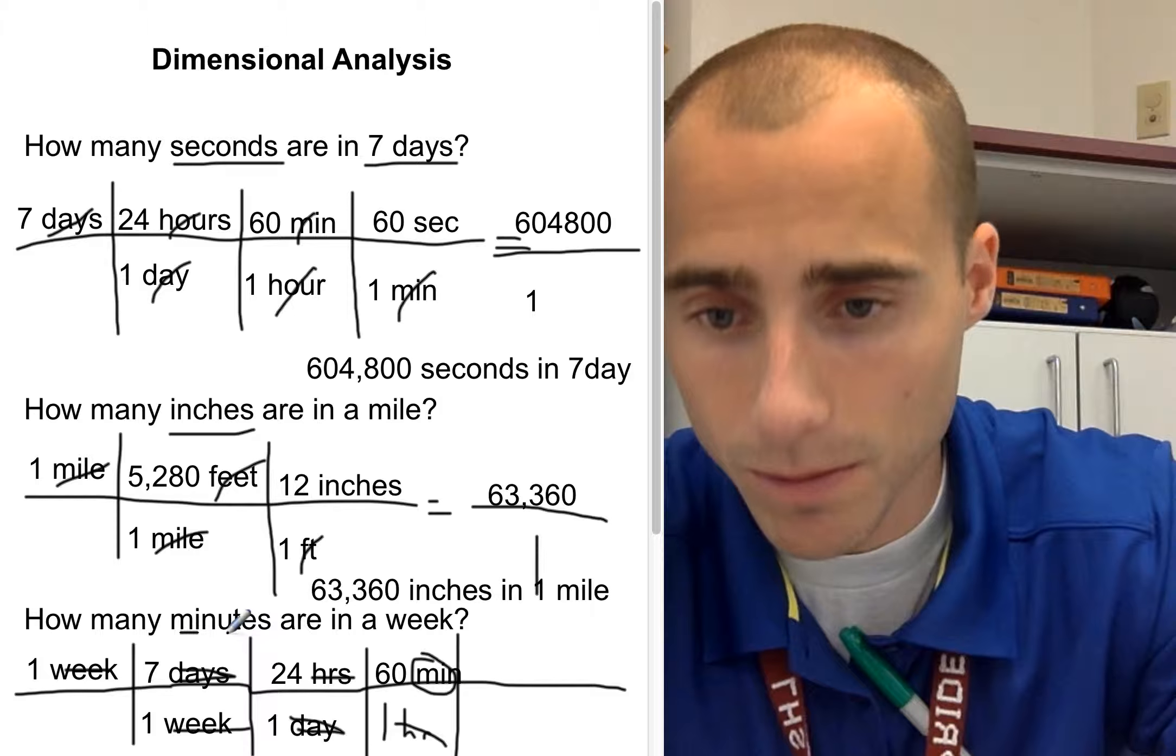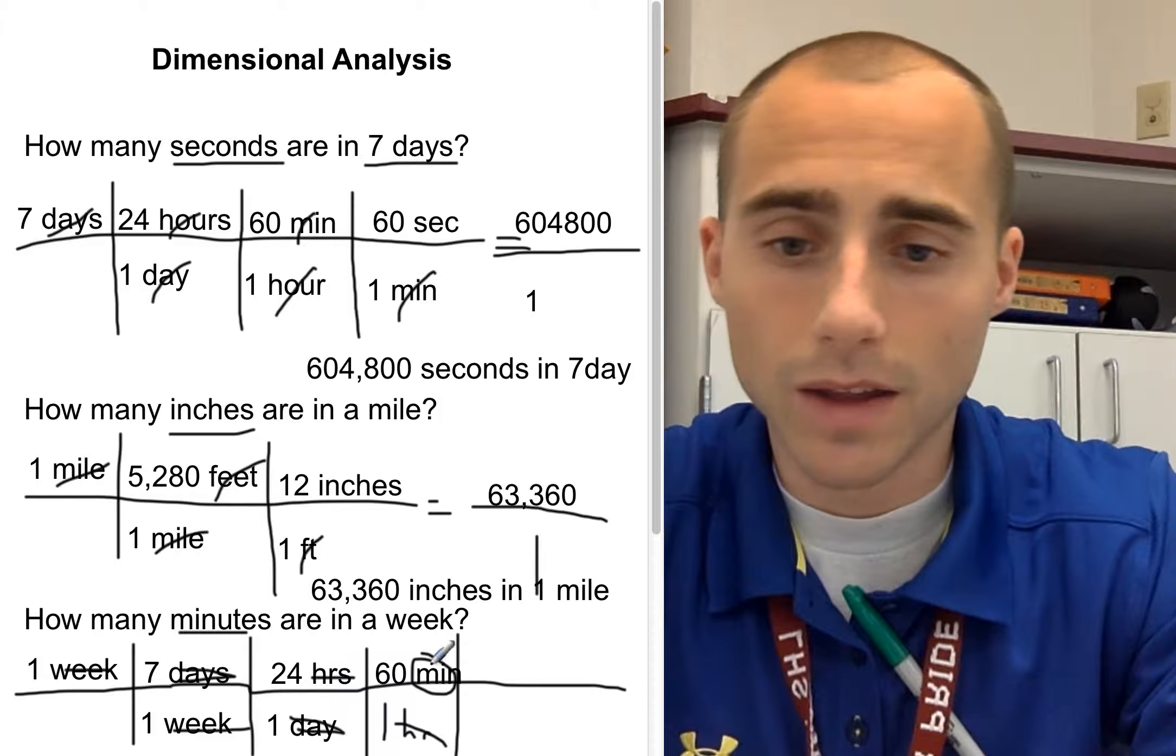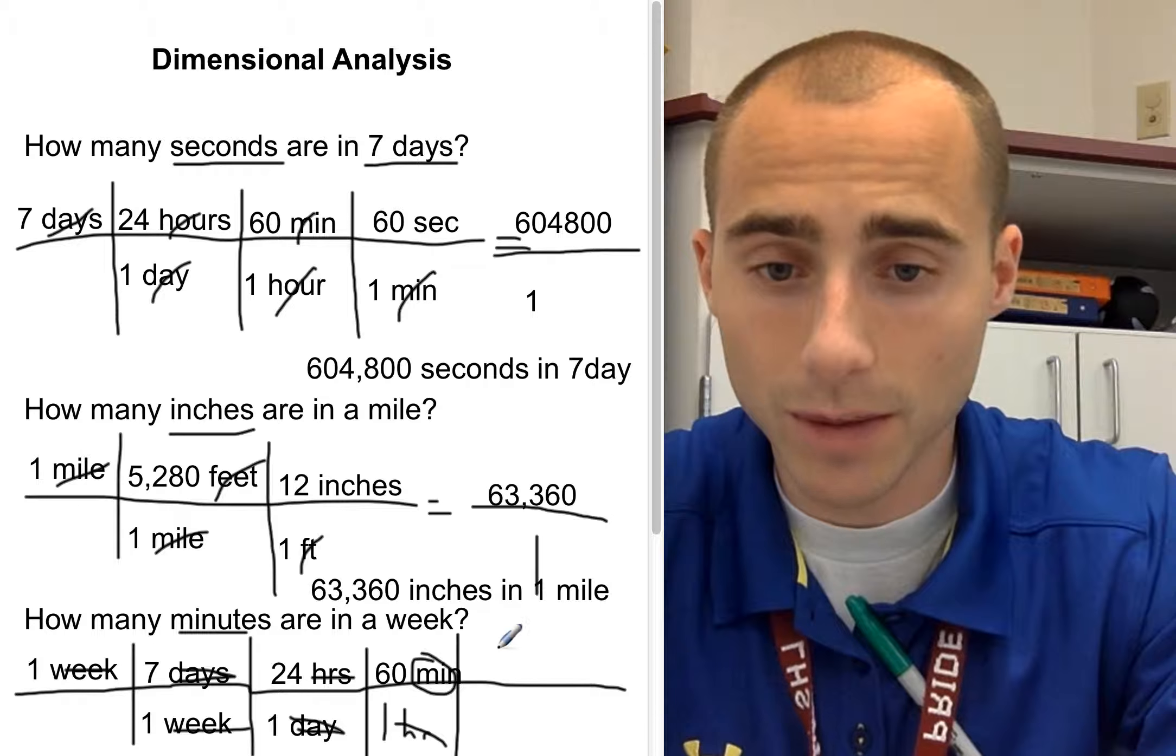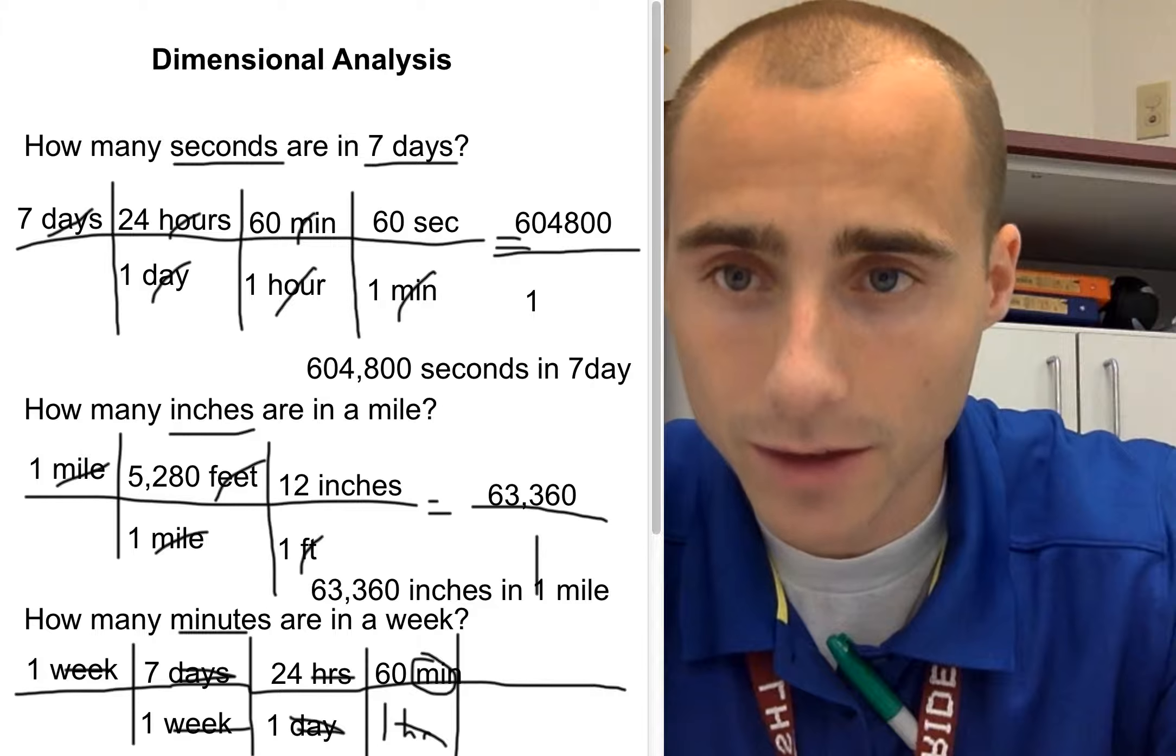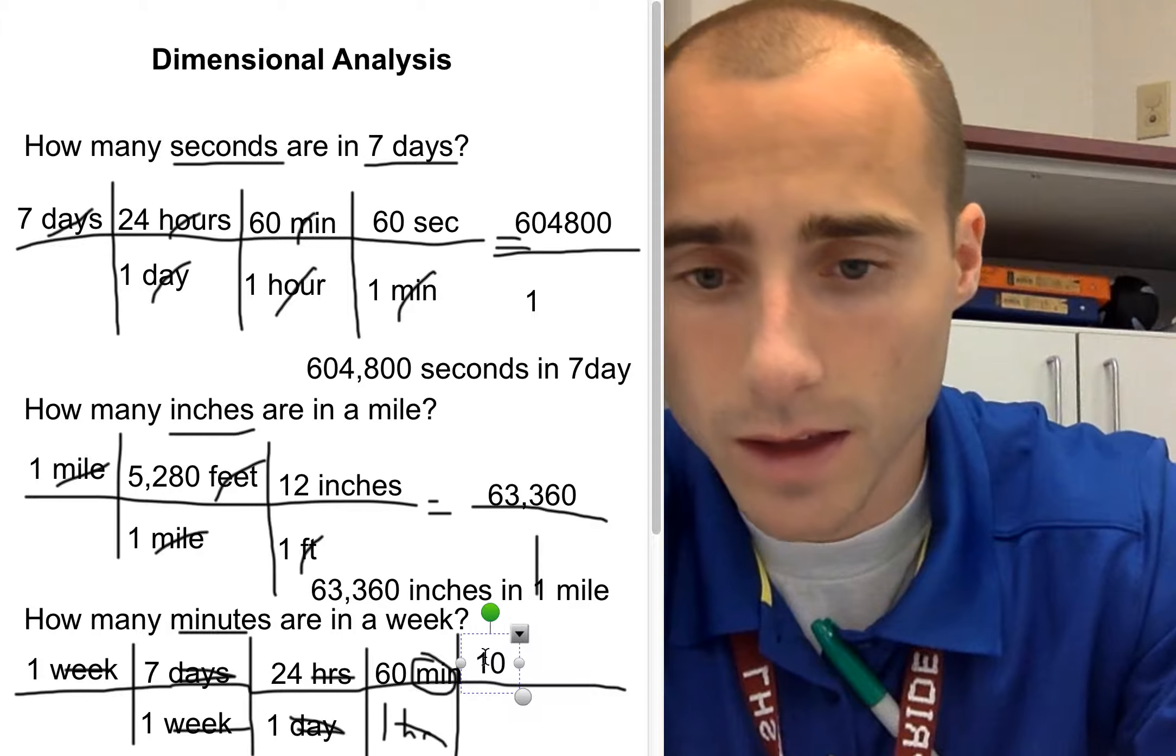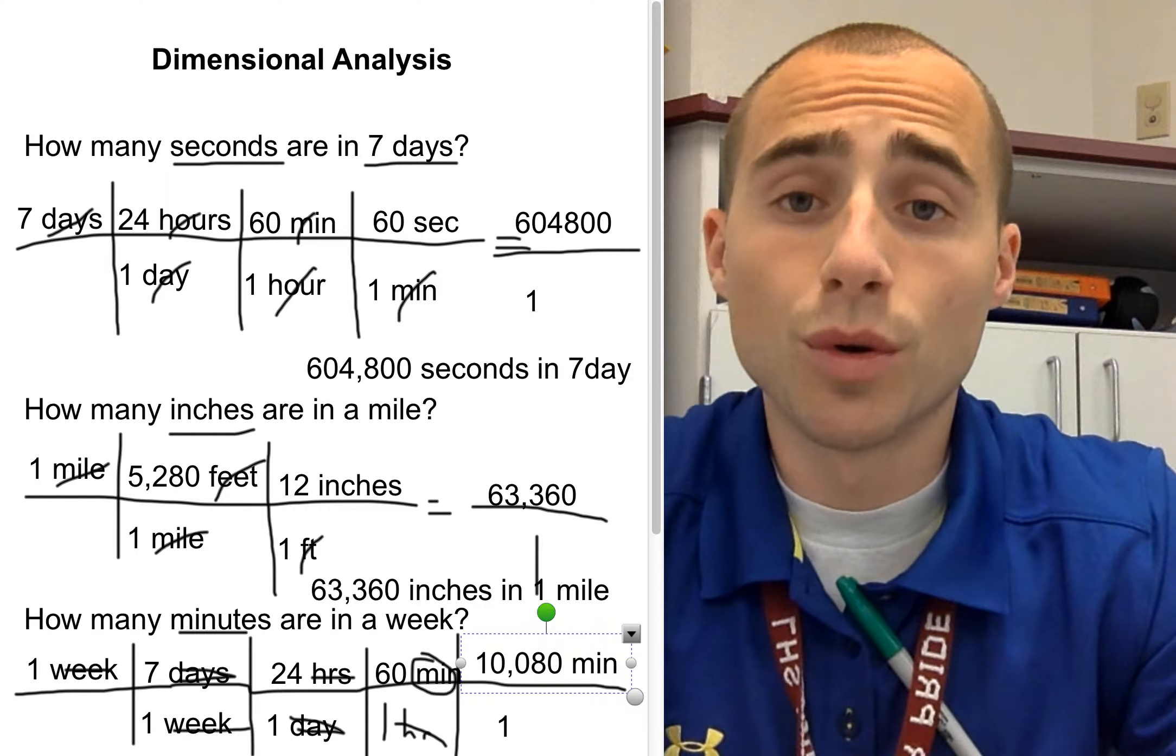And the original question asked how many minutes are in a week. Everybody see how we got here? We went from one week to seven days, seven days to 24 hours, and then hours down to minutes. And we canceled out things diagonally. So now we set up our fraction at the end. We do seven times 24 times 60. We get 10,080 on the top. 10,080. And on bottom, we have one again. So in the end, it's going to end up being 10,080 minutes in one week.